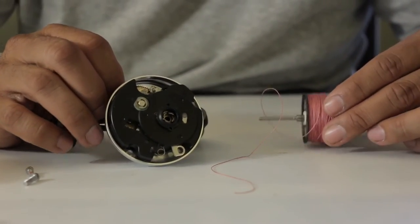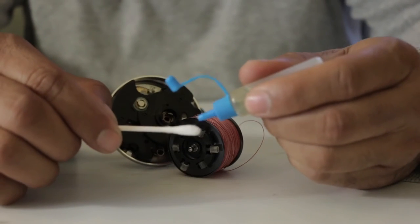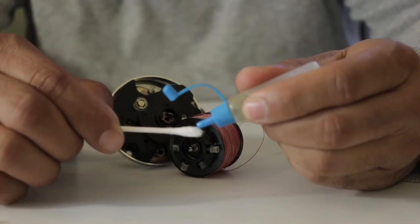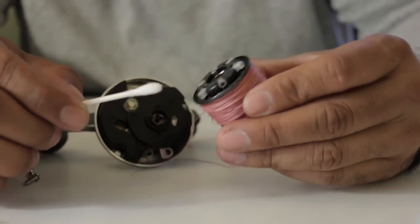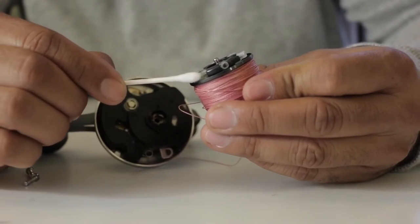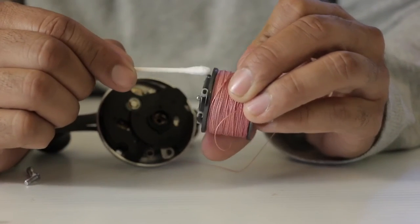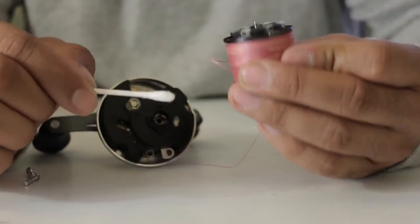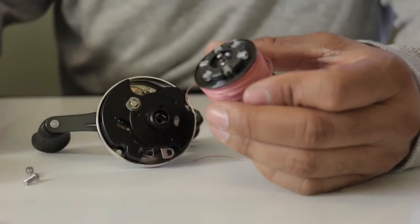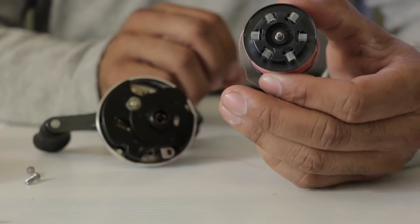So you want to keep that really clean. And then take my spool, and I want to put another drop of oil on this cotton swab, and rub it onto the brakes, the brake system here. Because that will give you a free casting, smooth reel.